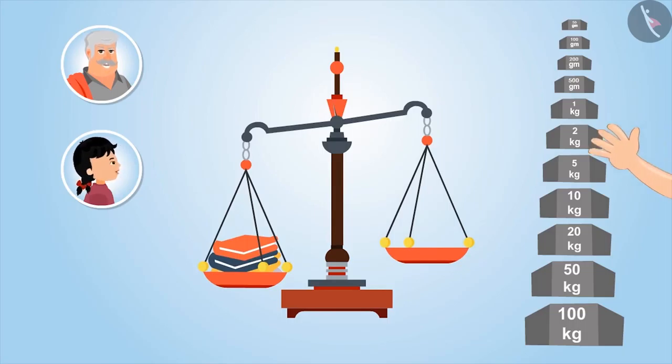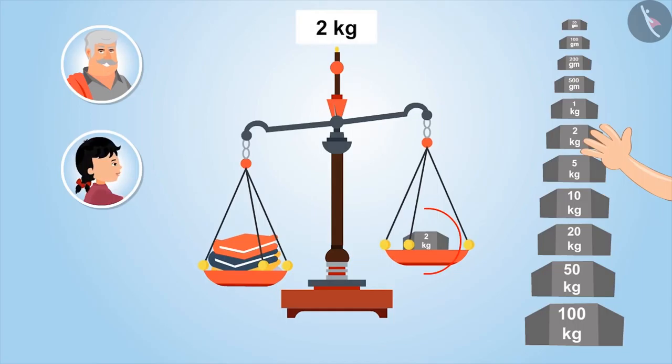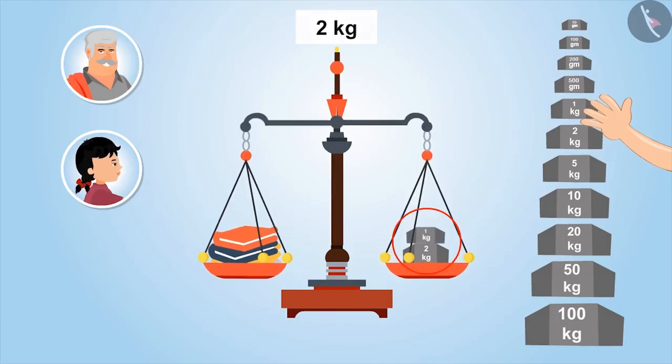Hmm, let's place weighing stone of two kgs first. Oh, this is still on the upper side. This means I have to add some more weighing stones. Let's add one more stone of one kg to it. Means now it becomes two and one, three kgs.